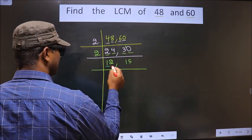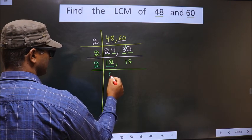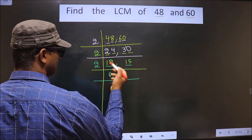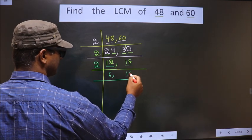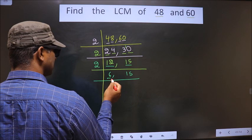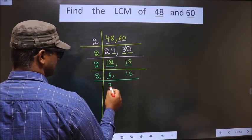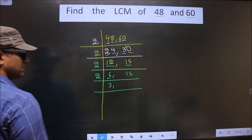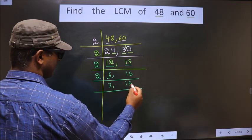Now here we have 12. 12 is nothing but 2 sixes are 12. Here we have 15. 15 is not divisible by 2, so you write down 15 as it is. Now here we have 6, which is even — 2 threes are 6. 15 is not divisible by 2, so you write down 15 as it is.